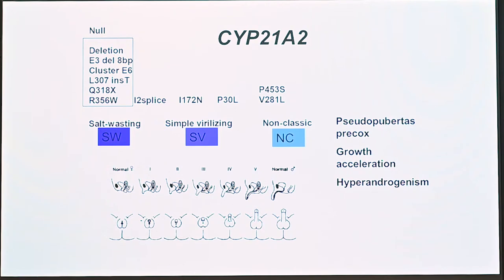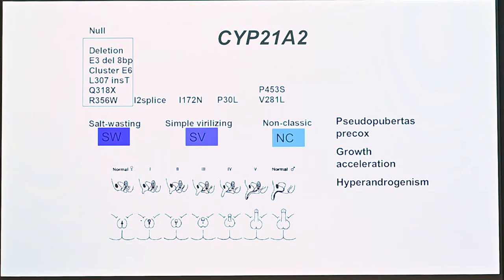If you have two null mutations with completely abolished enzyme activity, you end up in the most severe form — the salt-wasting form — where a newborn child won't survive more than two or three weeks without treatment. The I2 splice mutation, either as homozygote or heterozygote with a more severe form, leaves about 1% of enzyme activity and results in what is classically called simple virilizing CAH.